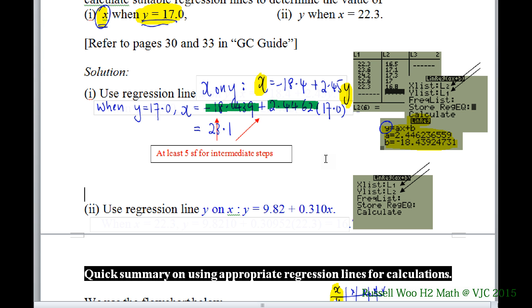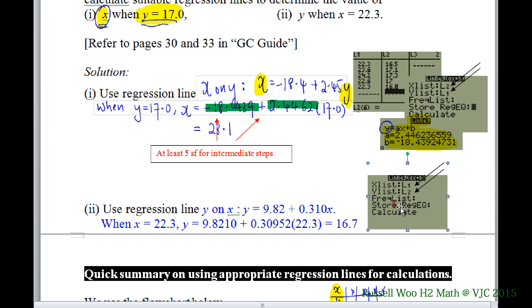You read off, you will get these values. And then all you need to do is to substitute X equals to 22.3. Notice that your intermediate step, I have 5SF here. This one is 5SF. This is 5SF. To get a good value for your final value of X.